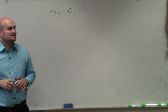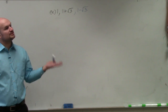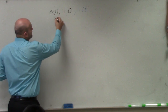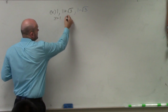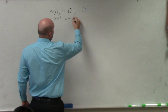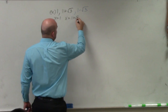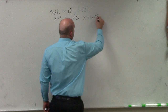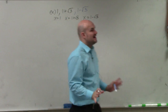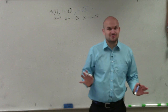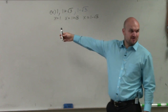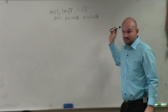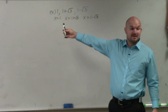What we'll do is we'll set them each equal to zero. So x equals 1, x equals 1 plus the square root of 3, and x equals 1 minus the square root of 3. Is everybody following me that I'm doing the exact same thing three times in a row? Find the zeros, set them equal to zero, or set them equal to x.